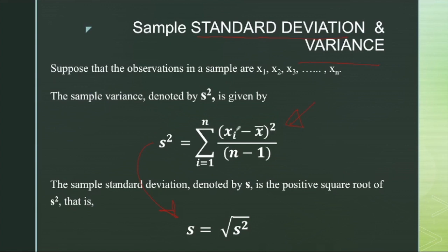Because if you don't square, take a square sum, it is going to be 0, or the effect of the positive deviation is going to nullify the effect of the negative deviation. That is why the square sum is taken, and n minus 1 instead of n is taken just because it is considered as degrees of freedom.